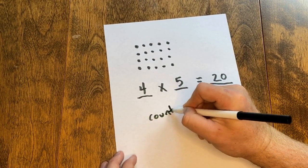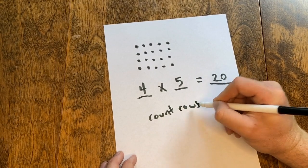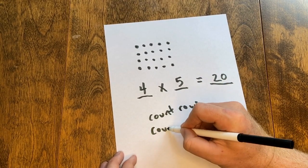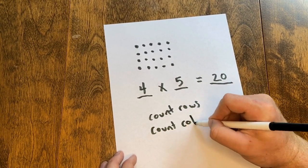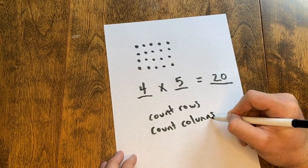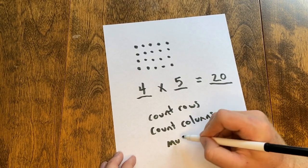So first step I count the rows. Next step I count the columns. And finally I multiply.